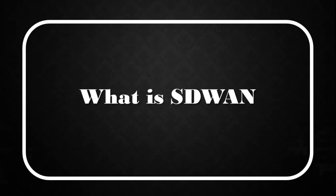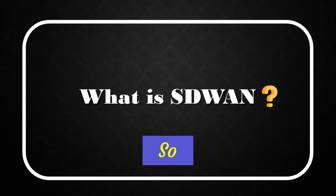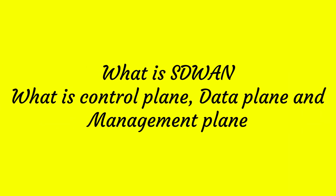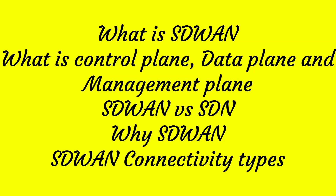Hello everyone, welcome back to Simple Networking. In this video we are going to see SD-WAN. SD-WAN abbreviation is Software Defined Wide Area Network. What we are going to cover in this video is: what is SD-WAN, control/data/management plane difference, SD-WAN vs SDN difference, traditional network vs SD-WAN network, how does SD-WAN work, why SD-WAN is needed, and finally SD-WAN connectivity types.